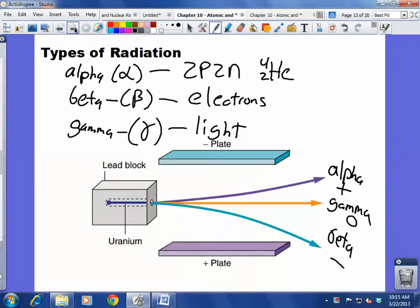And when an atom becomes unstable, remember, one of three things can happen. An alpha particle, a beta particle, or a gamma ray.